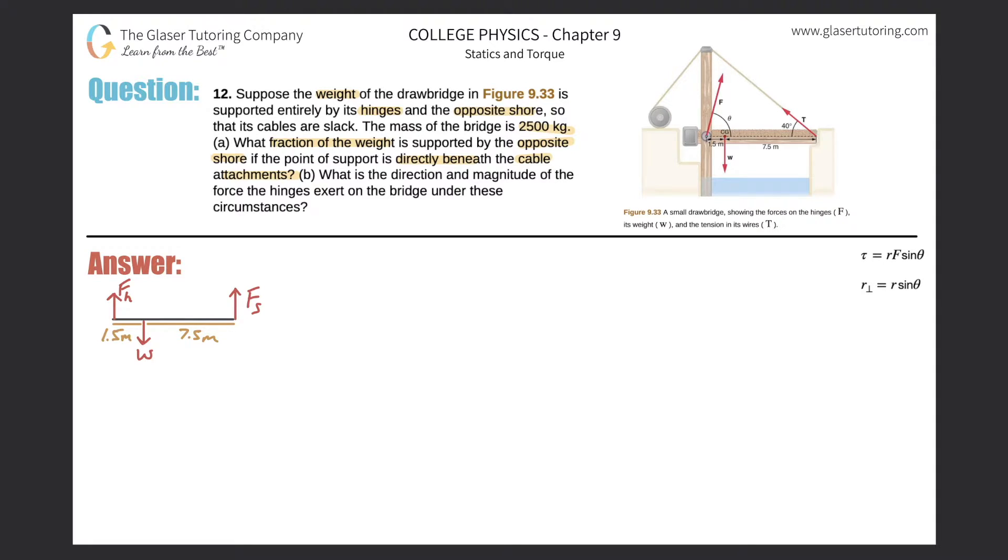So in terms of the forces that the hinge then is imparting to the drawbridge and this shore, I drew a little picture over here on the left hand side. The force of the hinge then is pointing directly upwards and the force of the opposing shore is pointing also directly upwards because the center of mass is pointing downwards, and therefore the weight, that's the force there.